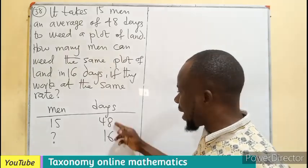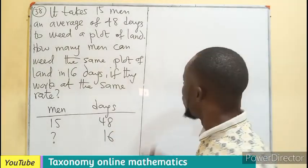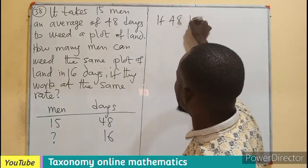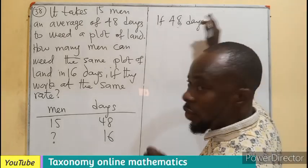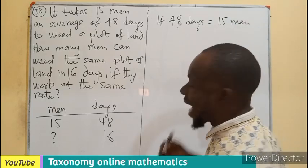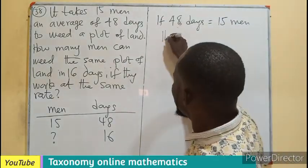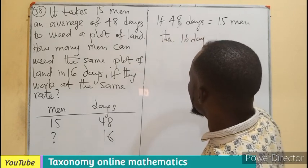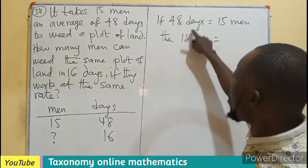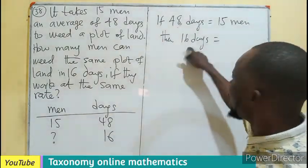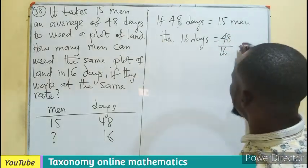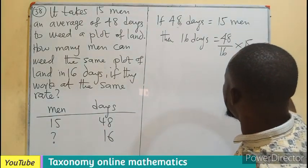What do we do? I will begin with the known, which is the tool. So if 48 days will be worked by 15 men, I expect to see that 16 days will require more men. So if more, less among the days, divide. The less is 16, so I will have my 48 over 16, the days over days will cancel, so I will multiply by 15 men.